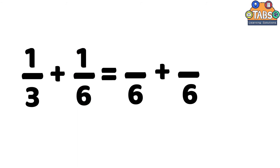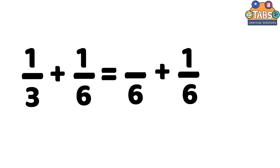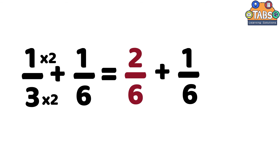Since 1 sixth already has 6 as its denominator, it will stay the same. For 1 third, we divide 6 by the denominator 3, so 6 divided by 3 is equal to 2. Therefore, we multiply both the numerator and the denominator by 2, so it becomes 2 sixths. Now the fractions have the same denominator of 6.